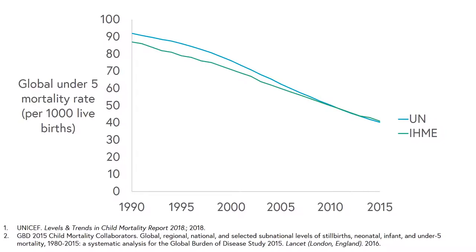Before moving on from child mortality rates, I want to make a technical but important point about where this data comes from. The line that starts slightly higher is the United Nations estimate, and the next is from the International Health Metrics and Evaluation Unit in Seattle. Many countries do not have comprehensive vital registration systems that allow us to use actual numbers of births and deaths to calculate the under-5 mortality rate. For these places, the rate is estimated from censuses and parts of the population that have been monitored more closely. The statistical methods are different for the UN and the IHME, but at a global level the numbers agree quite closely. At country level, the estimates can be very different, which can make it difficult to know where to focus our efforts and to accurately monitor progress. This highlights the importance of good quality data.